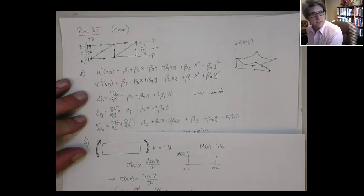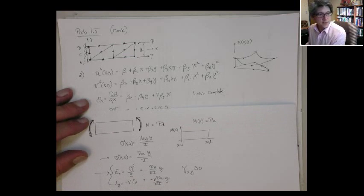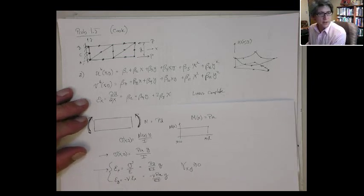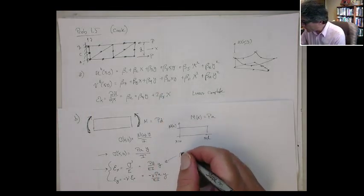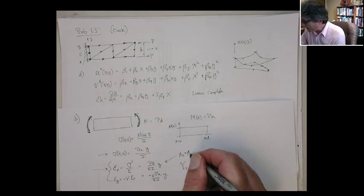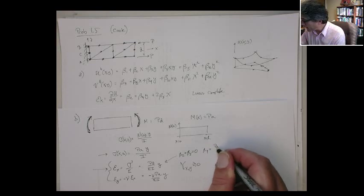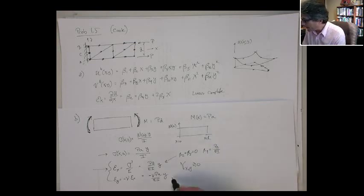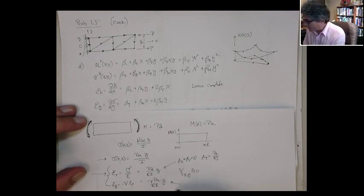For example, we know that the normal strain is going to be roughly the stress divided by Young's modulus. So that would be PA on EI times y. Now, the lateral strain is going to be, through Poisson's ratio, minus nu times the longitudinal strain. So that gives me minus nu PA on EI times y.